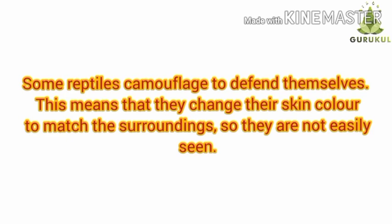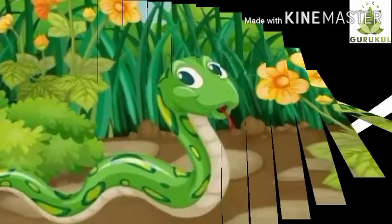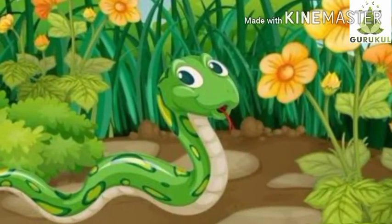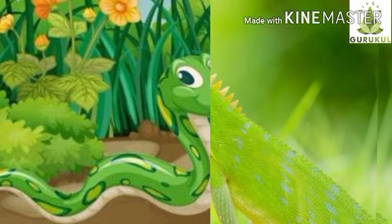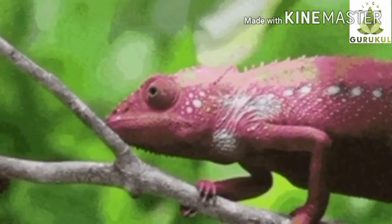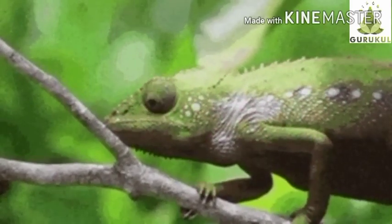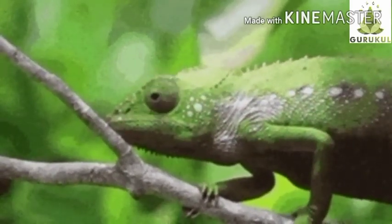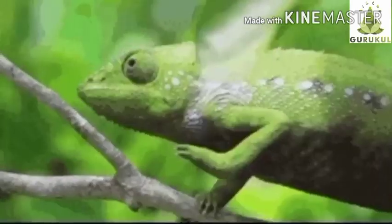For example, in green grass, a reptile can blend in with the green color. The chameleon is well known for changing color to camouflage itself.